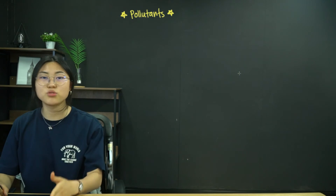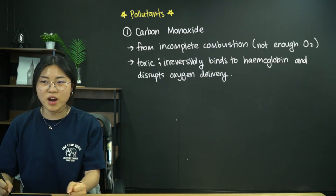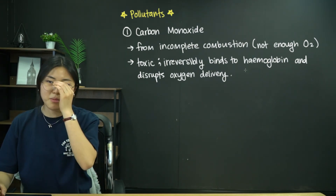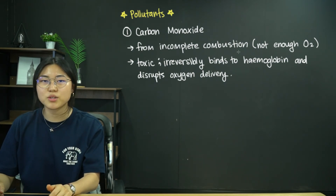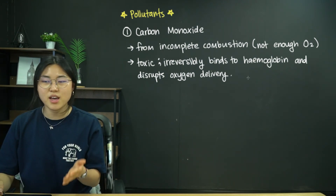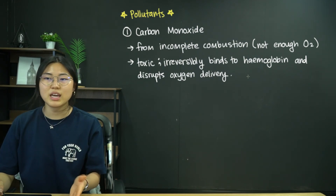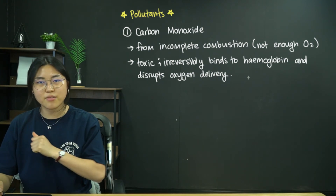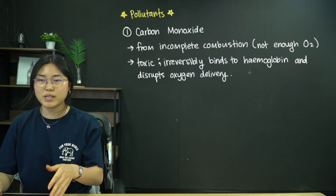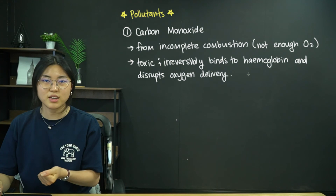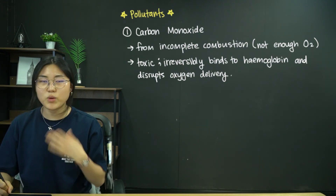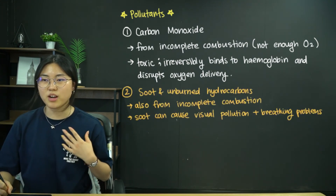Now we're going to discuss pollutants. First, we have carbon monoxide, which is produced from incomplete combustion when there is not enough oxygen. This is problematic because it's toxic — carbon monoxide irreversibly binds to hemoglobin, which delivers oxygen around our body, disrupting oxygen delivery. Hemoglobin normally picks up oxygen in the lungs and brings it to respiring tissues. But if it binds with carbon monoxide, it cannot hold oxygen and it won't let go of the carbon monoxide. That's why it's toxic.